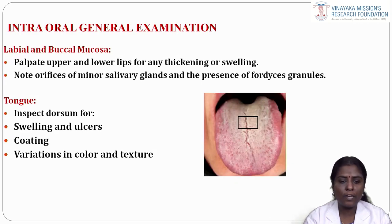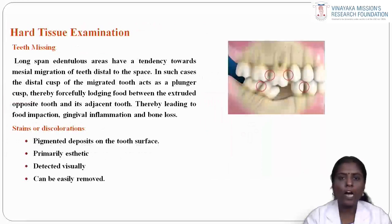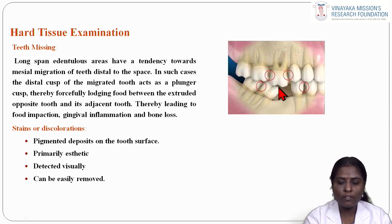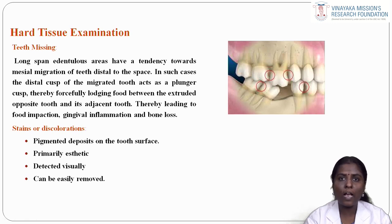For the intraoral general examination, we first check the labial and buccal mucosa. Palpate upper and lower lips for any thickening or swelling. Note orifices of minor salivary glands and presence of Fordyce granules. Inspect the tongue dorsum for swelling, ulcers, coating and variations in color and texture. In the hard tissue examination, note any missing teeth. Long span edentulous areas tend towards mesial migration distal to the space — the distal cusp of the migrated tooth acts as a plunger cusp, leading to food impaction, gingival inflammation and bone loss.